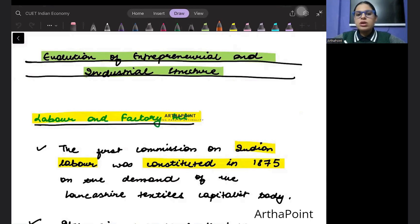Evolution of Entrepreneur and Industrial Structure. In this video lecture, we are going to talk about how the entrepreneurs evolved in India, how the industrial sector evolved and what changes occurred in India. The first thing that we have to understand is labor and factory act.